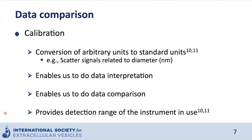Calibration enables us to do data interpretation properly. If you relate your scattering signals to diameter, you can confirm that you are in the size regime that vesicles should have and that you didn't detect cells. It also enables data comparison, and it provides the detection range and sensitivity of the instrument, which is important when comparing data within the same ranges.